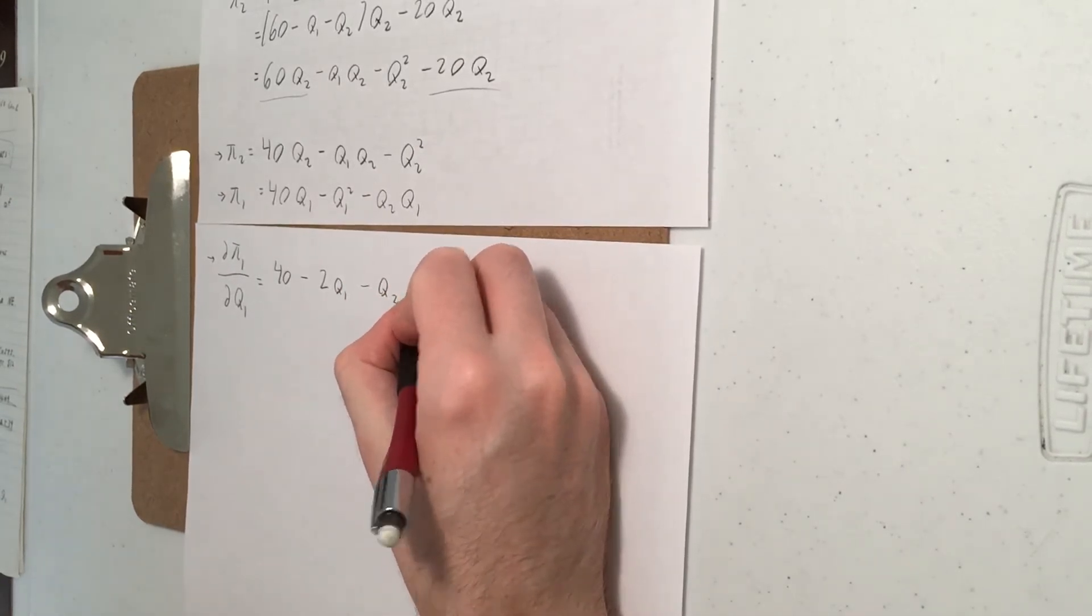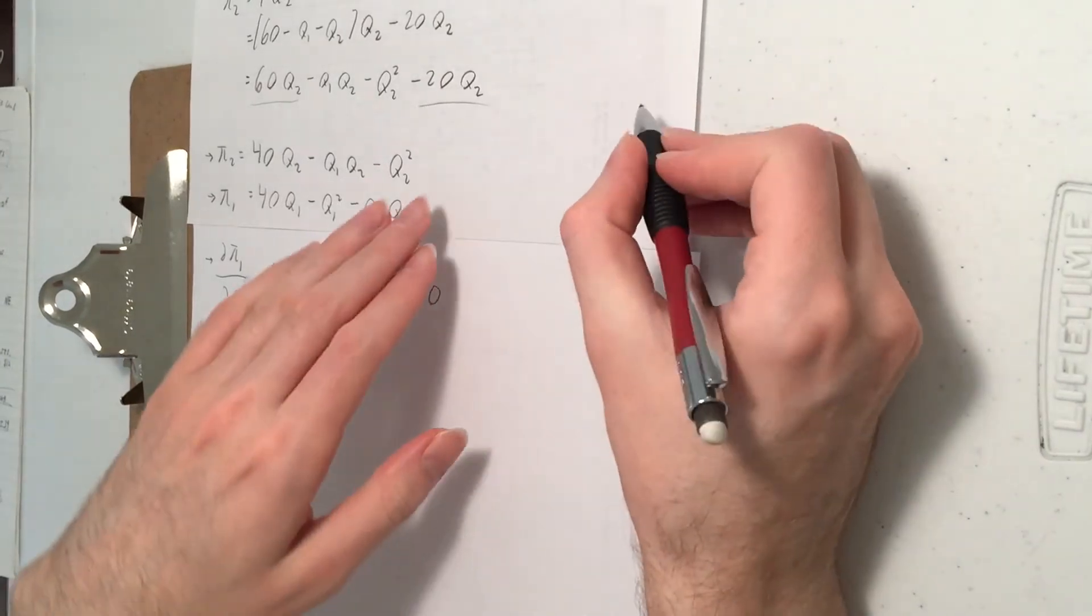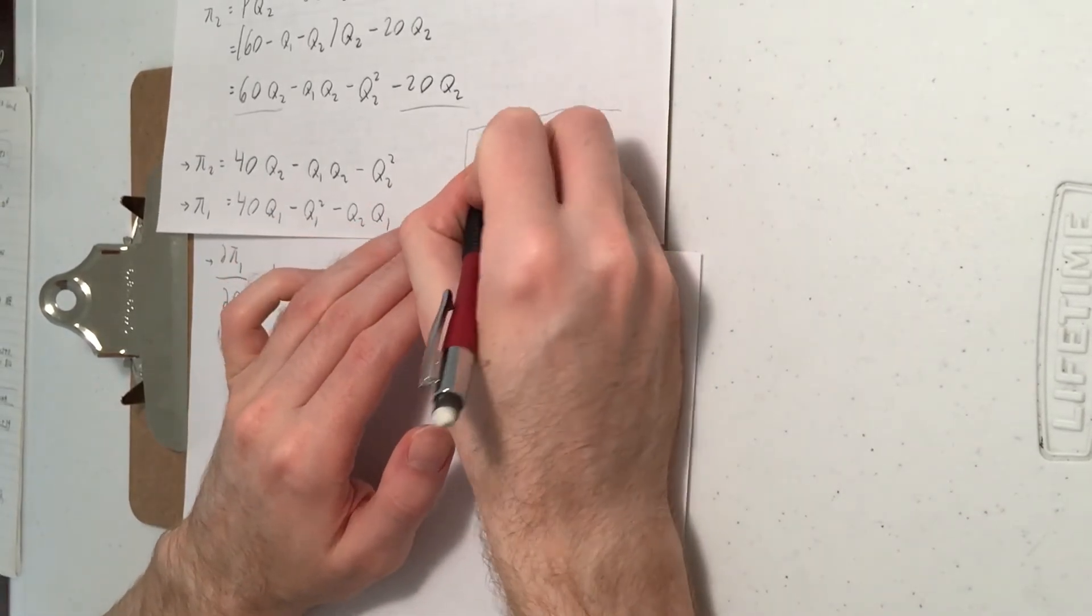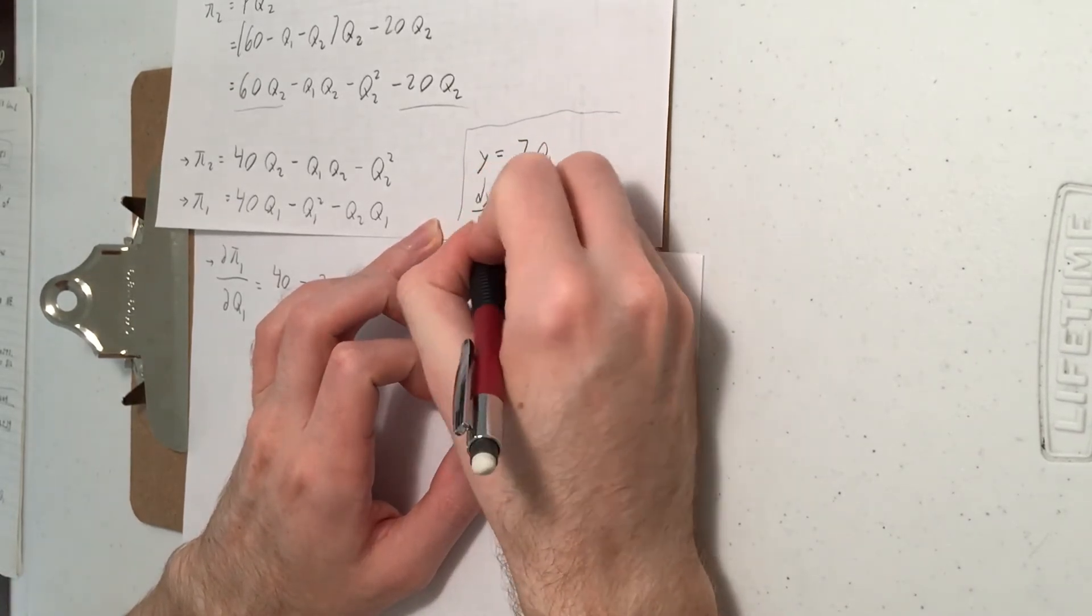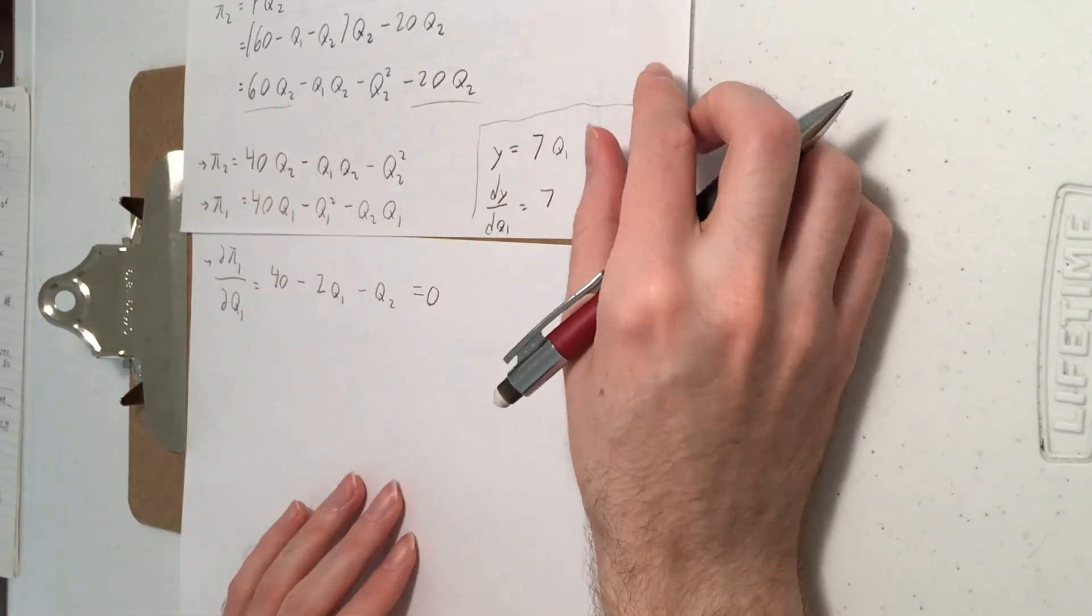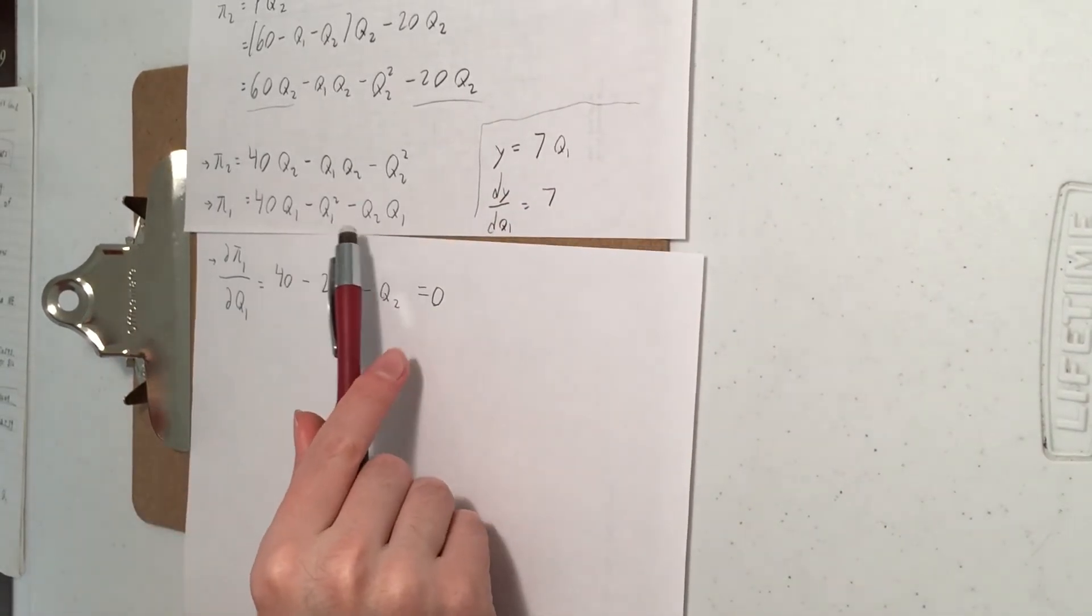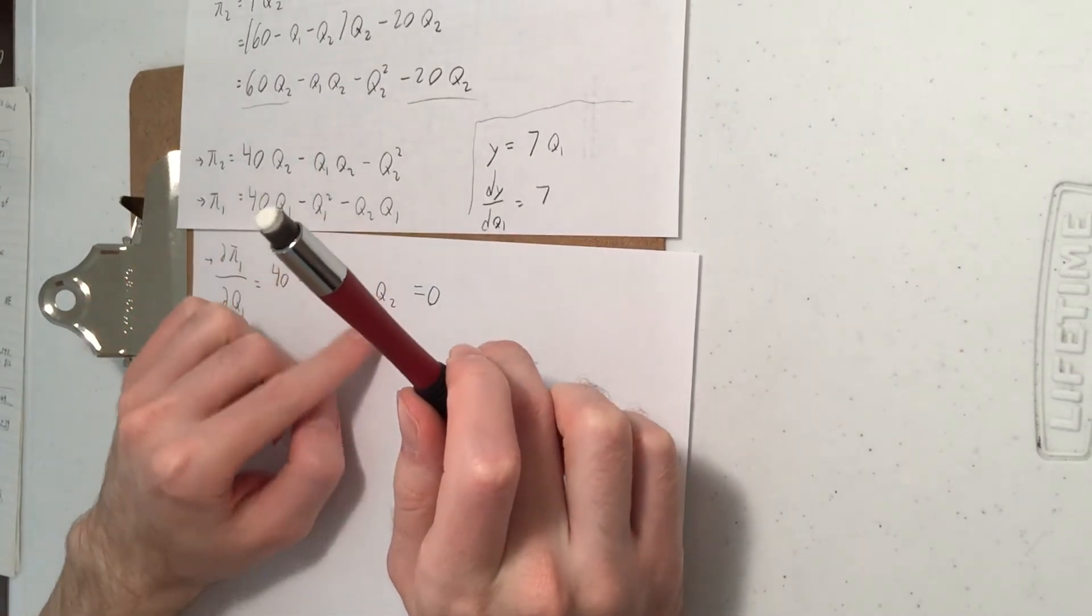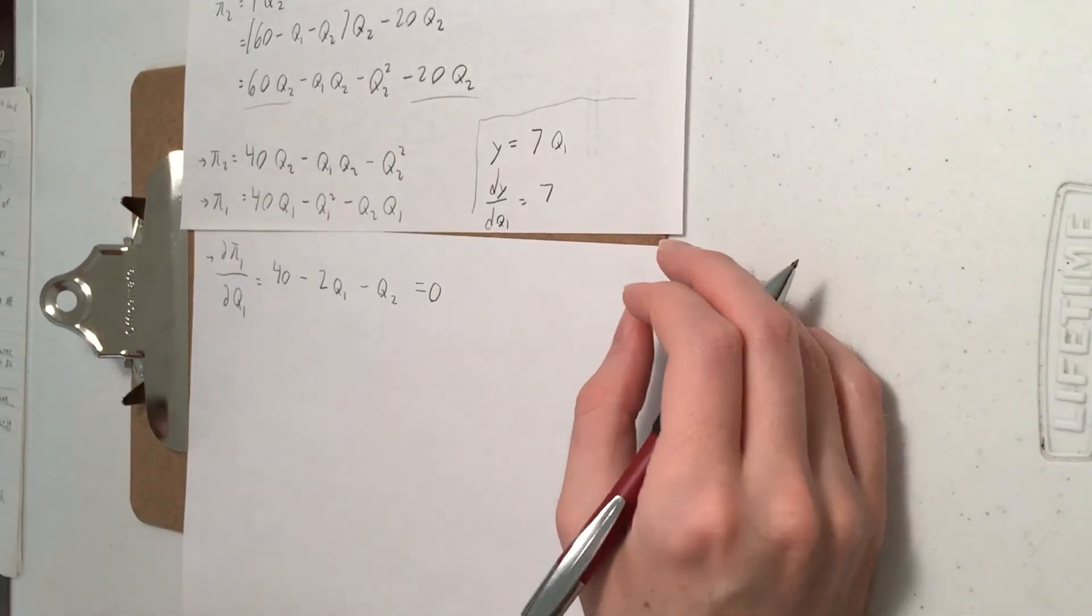So again, with partial derivatives, you're going to treat all variables other than Q1 as if they are constants. So we see a Q2 times a Q1, that Q2 is treated as if it were a constant. So we have something like Y equals say 7Q1, DYDQ1 is going to be just 7. 7 is a constant, so that's what happens when you have a constant times Q1. Likewise over here, you treat Q2 as if it were a constant. So the constant sticks around and Q1 goes away. That's how partial derivatives work.